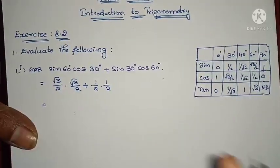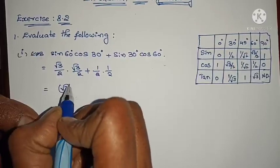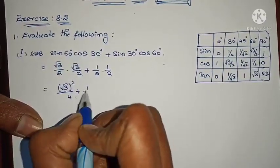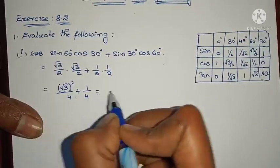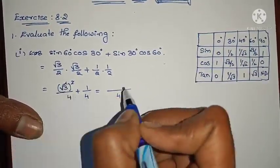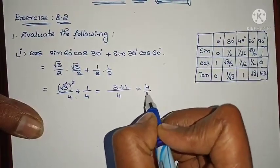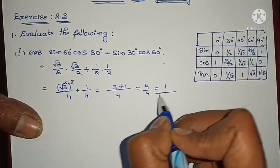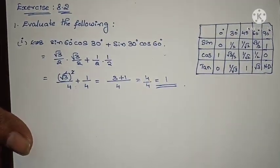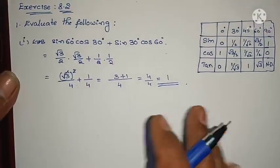Root 3 into root 3 is root 3 whole square, divided by 2 × 2 = 4, plus 1/2 × 1/2 = 1/4. Taking 4 as LCM — square and root cancel — giving 3 + 1 = 4 divided by 4, which equals 1. Your problem is over. Very simple! If you write this table, every problem is easy.